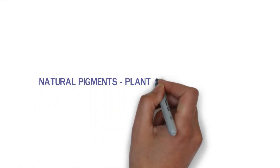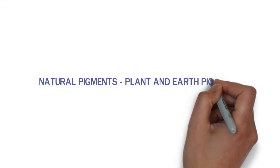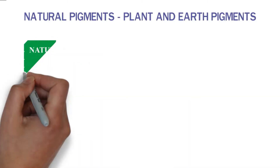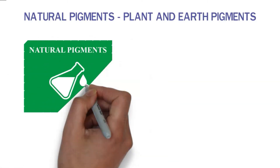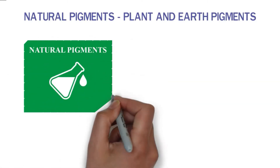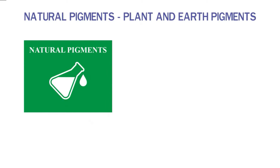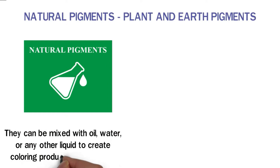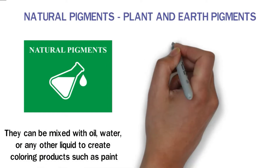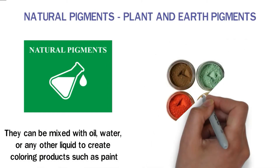Natural pigments are naturally occurring colored substances obtained from plant or mineral compounds. They can be mixed with oil, water, or any other liquid to create coloring products such as paint.